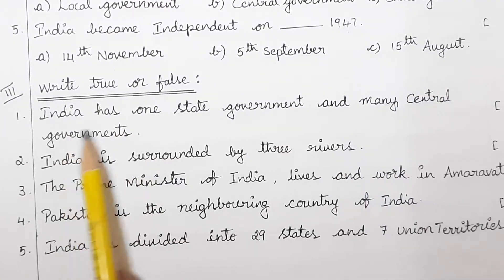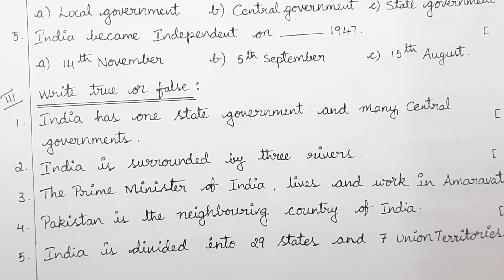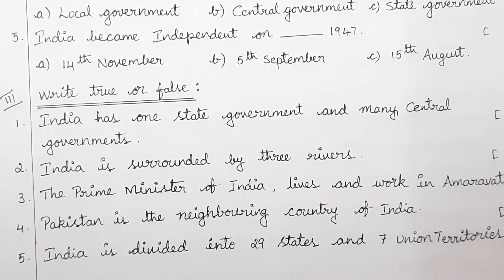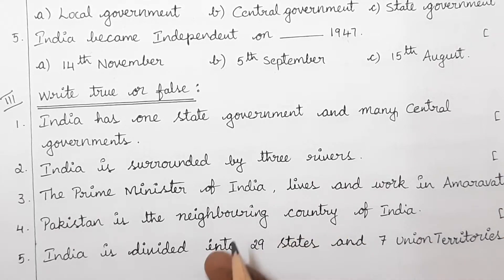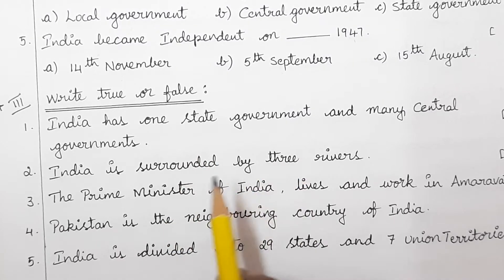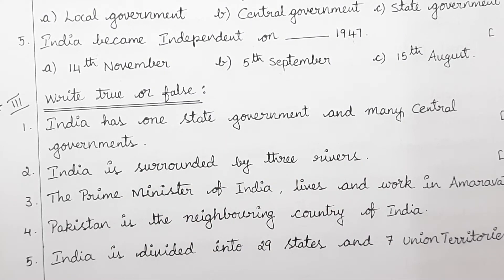Next, write true or false. While writing true or false, think again and again about the question. Find out whether the statement is true or false — don't write immediately. Some tricky sentences will be there. For example: 'India has one state government and many central governments' — read it three or four times, then answer.